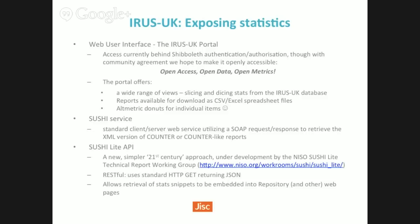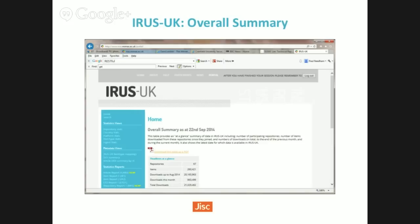In terms of exposing the data, there's a website with live data. It's available in a wide variety of formats, including via its own SUSHI server. As part of the Counter work, they're also going forward with a SUSHI Lite version, which will remove some of the XML bloat you get when trying to describe all the articles. The main website is essentially a load of numbers in spreadsheets, added together in interesting ways in response to what the user community wants.